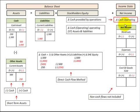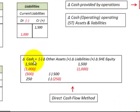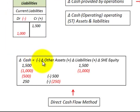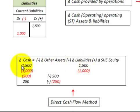Our change in cash for operating activities would include our revenues, expenses, and costs of goods sold that are included in net income. We're looking at the change in cash provided by these operations. That change in cash for operating activities would include our short-term assets and liabilities. For example, a positive change in liabilities of $1,500 translates to a change in cash of $1,500 — the same amount.